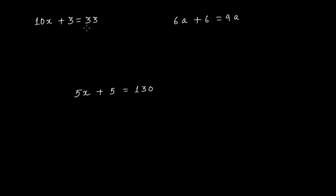Consider the equation 10x + 3 = 33. It's an equation because you have an equal sign with expressions on both sides. This particular equation is only and only true for x = 3. You cannot put any other value and have it hold true. For example, if you put 4, you get 43, which is not equal to 33. But if you put 3, you get 30 + 3 = 33, so 33 = 33.